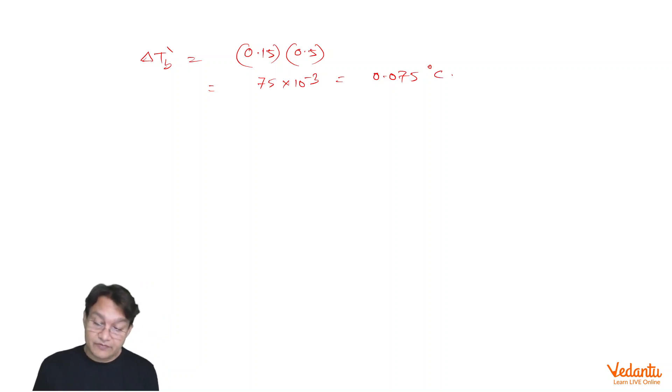So, difference between these two, delta TB minus delta TB dash, which is asked is equals to 0.100 minus 0.075 and which is 0.025 degree centigrade,